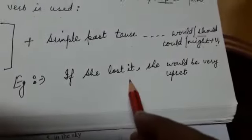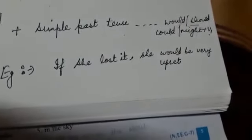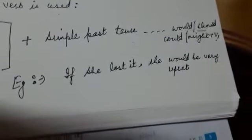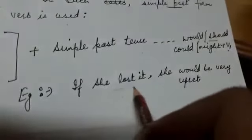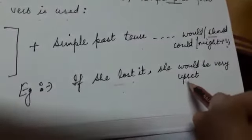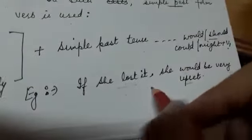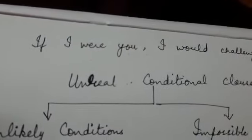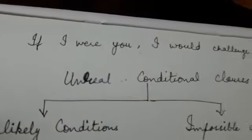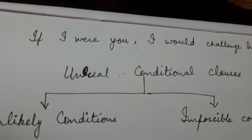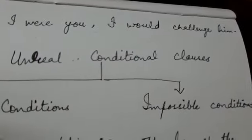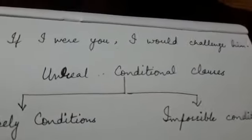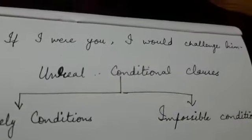See this: If she lost it — agar woh is cheez ko guma deti — she would be very upset. Aisa hua nahi hai, we are just thinking of it. Unreal condition hai. And: If I were you, I would challenge him — agar main aap ki jagah pe hota, main us ko challenge karta. Means unreal hai — woh condition fulfill nahi ho sakti. Aap kabhi kisi aur ki jagah nahi le sakte.